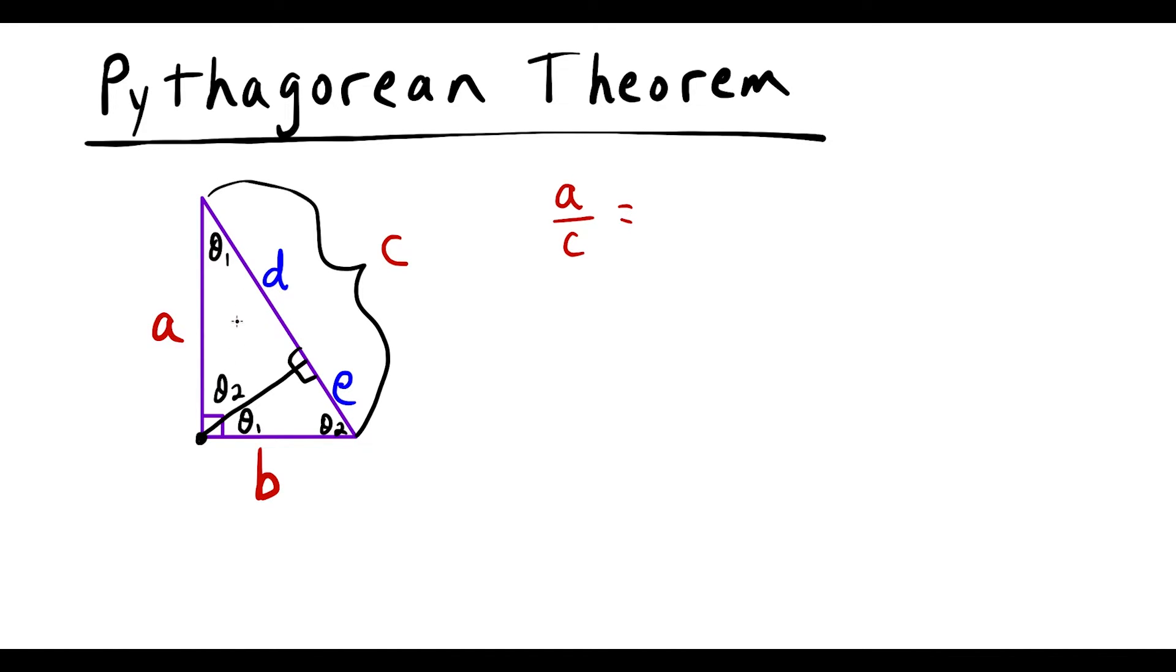But in this medium-sized triangle d is the leg. So I'm going to write d over the hypotenuse of the medium-sized triangle is a because it's across from the right angle like this.